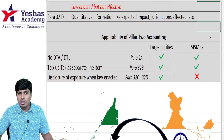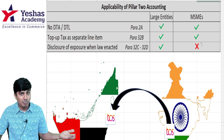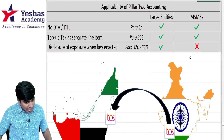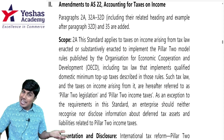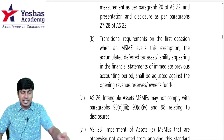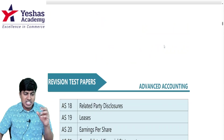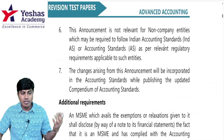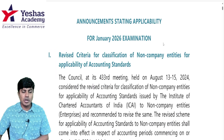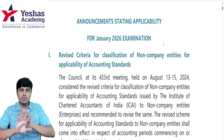This is the entire concept of OECD — I hope it was helpful. Last but very important: this is not the only amendment in your January 2026 RTP. There is one more amendment given before this — a change in the applicability and classification of non-corporate entities regulated by ICAI. Previously we used to have Level 1, Level 2, Level 3, Level 4. Now it has been changed.